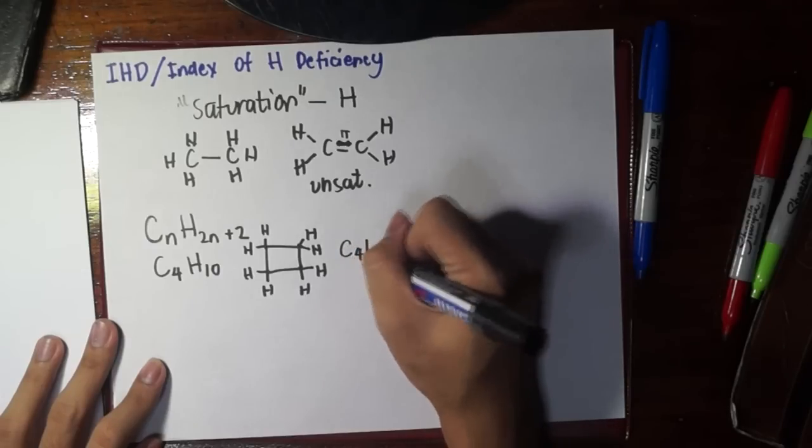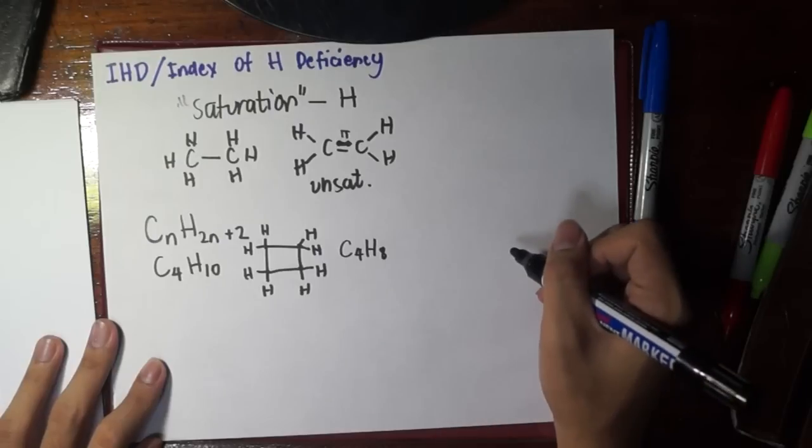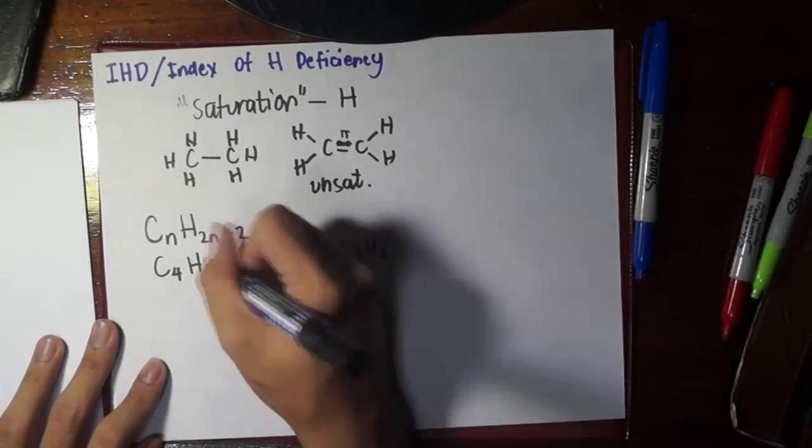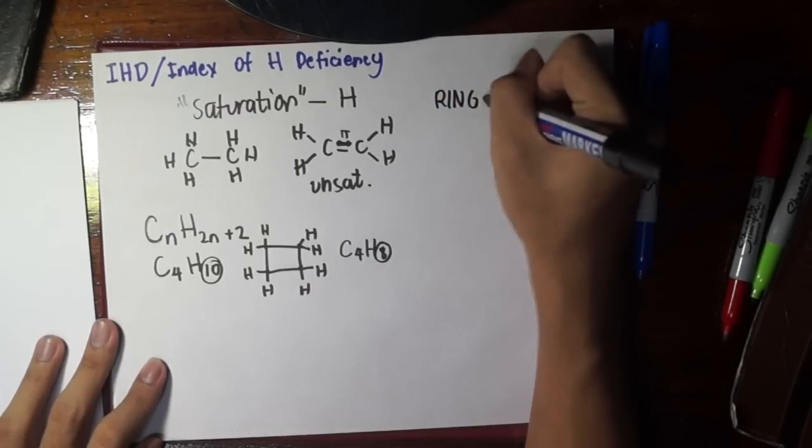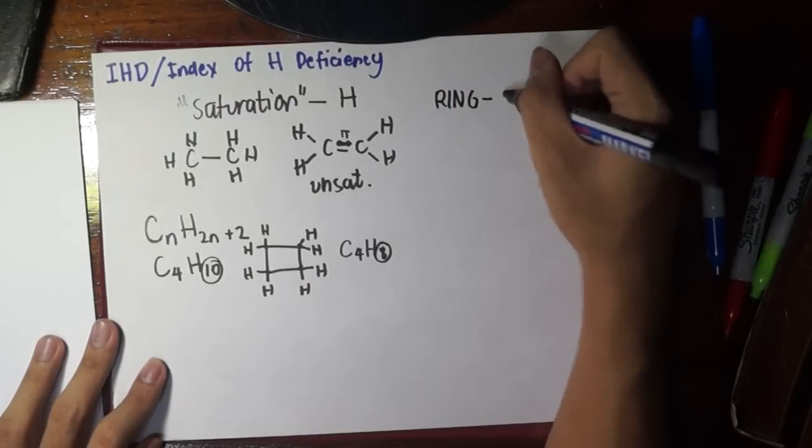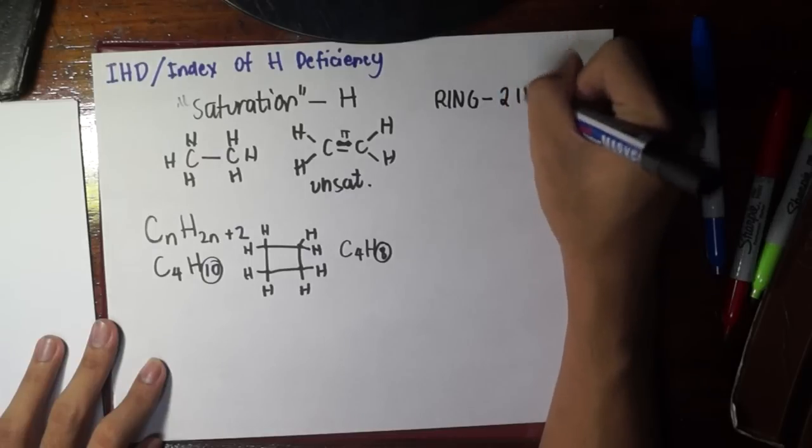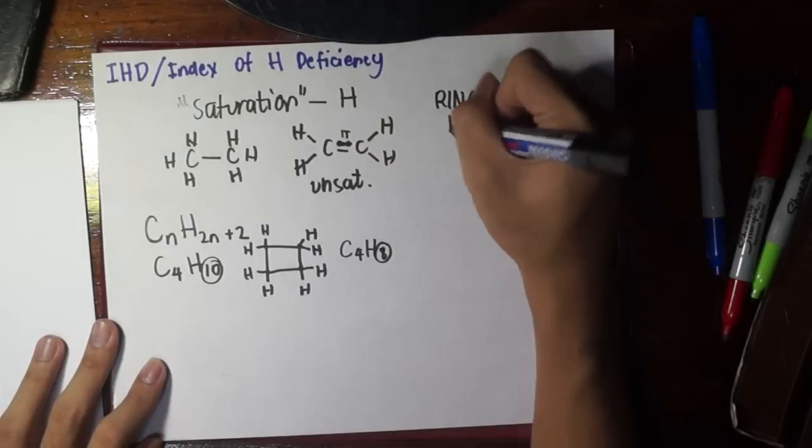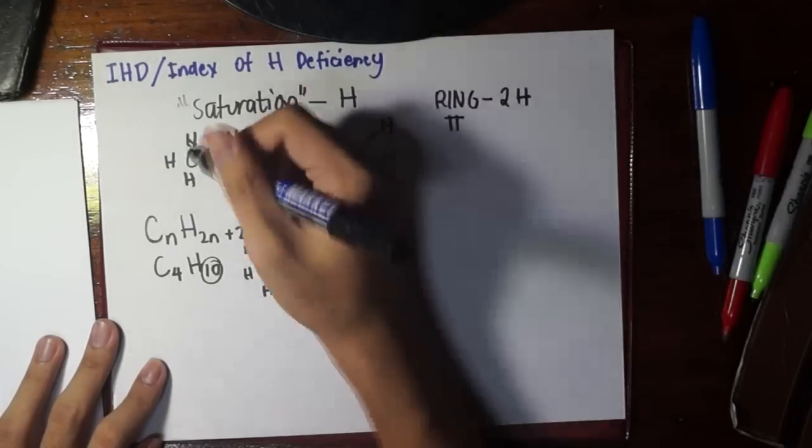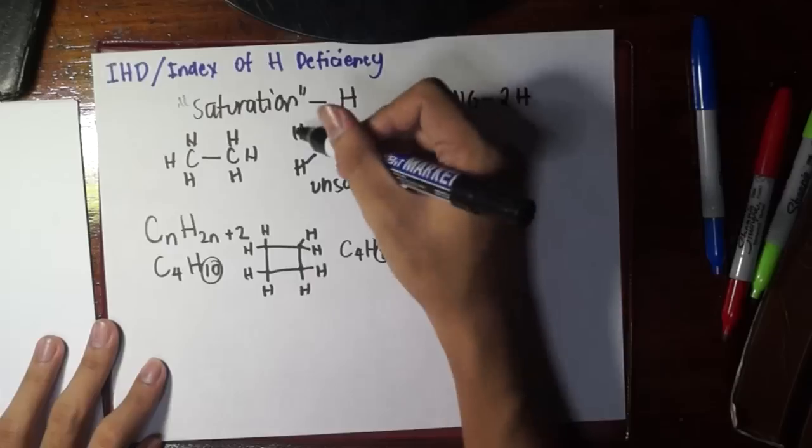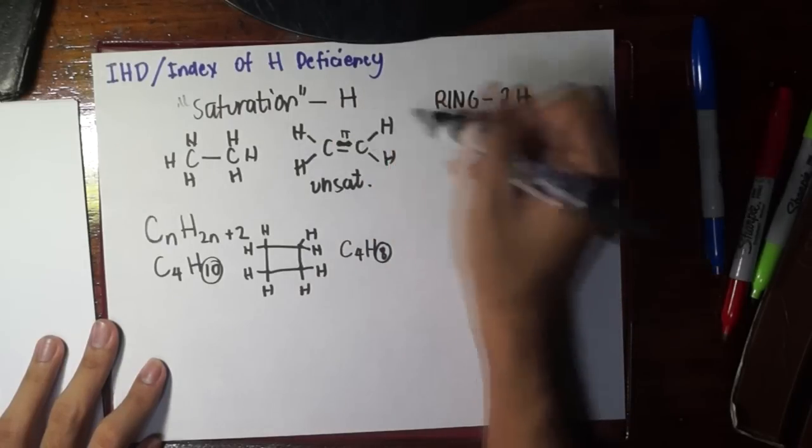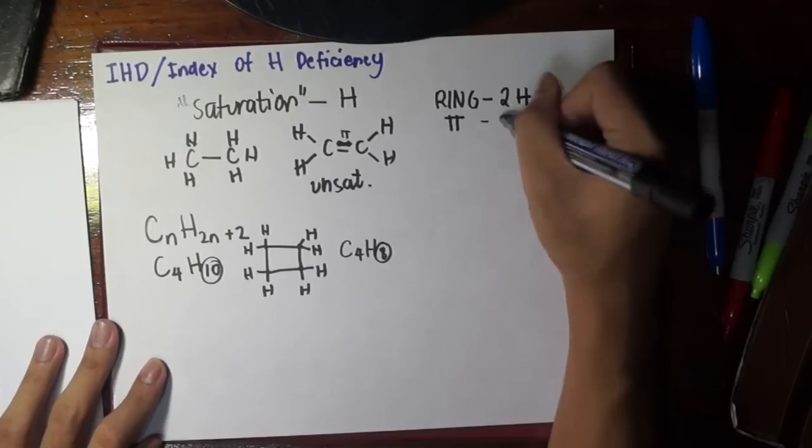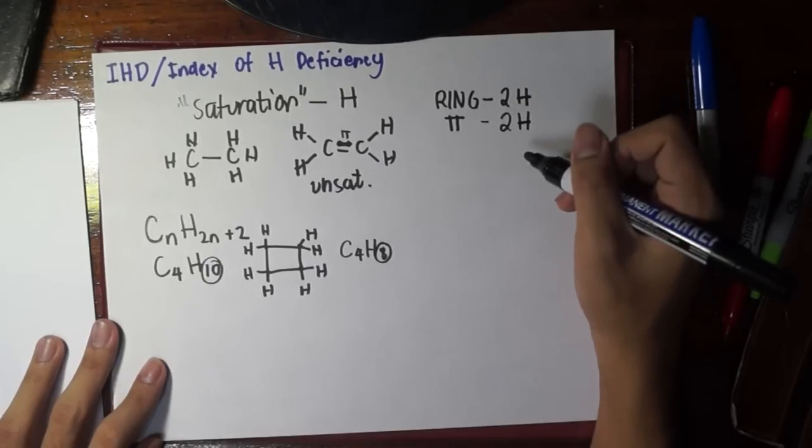C4H8 - we only have eight hydrogens. So here we can see that for every ring formed, you have a deficiency of two hydrogens. For every pi bond also, we have a deficiency of two hydrogens. This means for every pi bond we also lose two hydrogens.